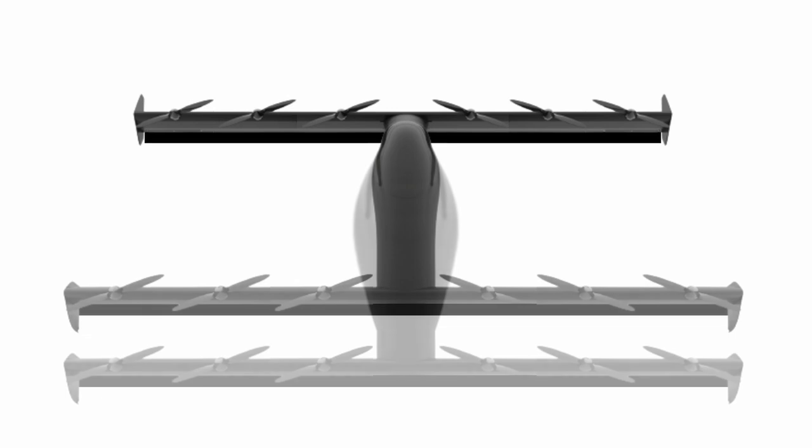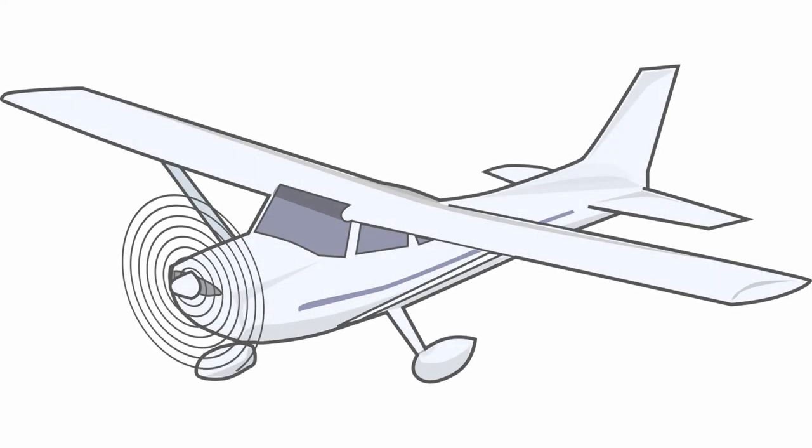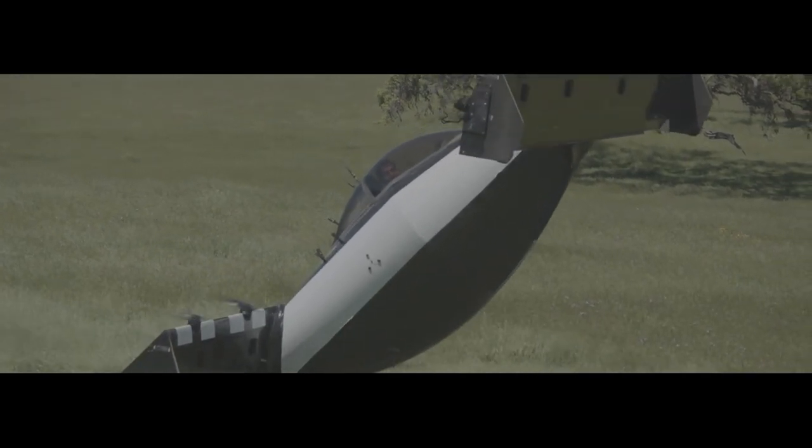The fuselage can be extended to increase the space inside of the aircraft. Bear in mind that this extended design has a smaller footprint than a Cessna 174 and yet it can take off from and land in your back garden which the Cessna cannot.